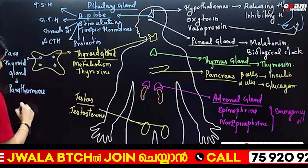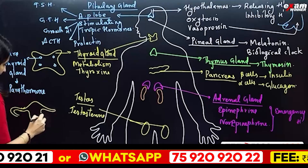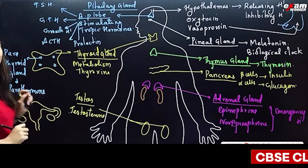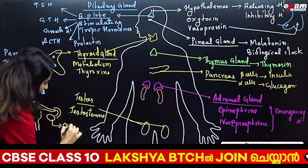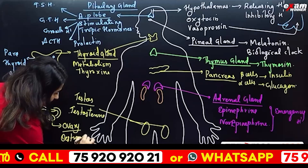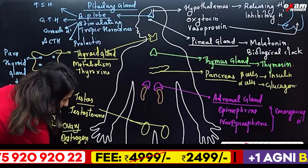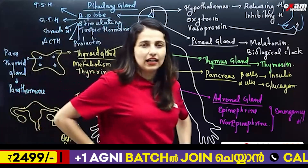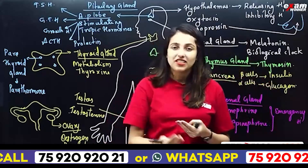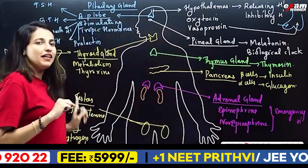Now let's talk about females. Females have ovaries — males have testes and females have ovaries. Two hormones are estrogen and progesterone. These are female hormones responsible for secondary sexual characters such as breast development, arm/body hair growth, and menstruation.